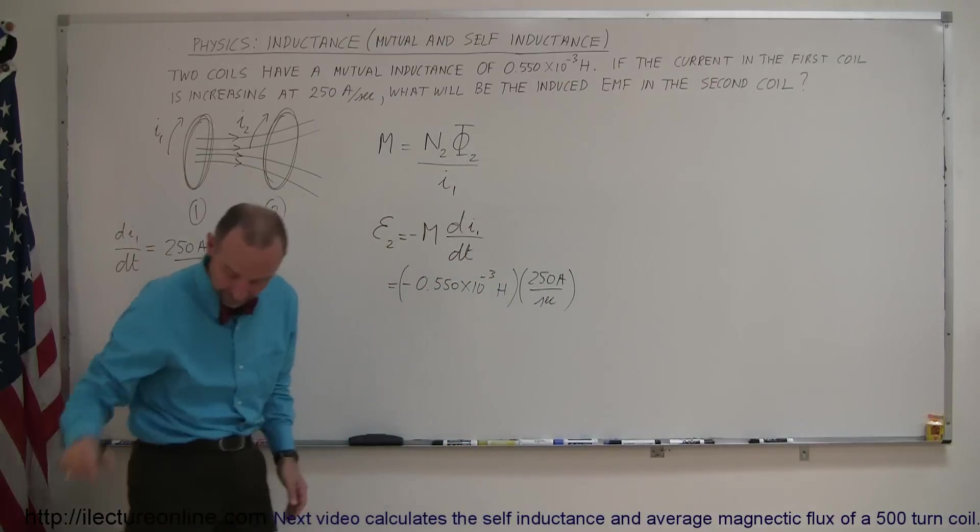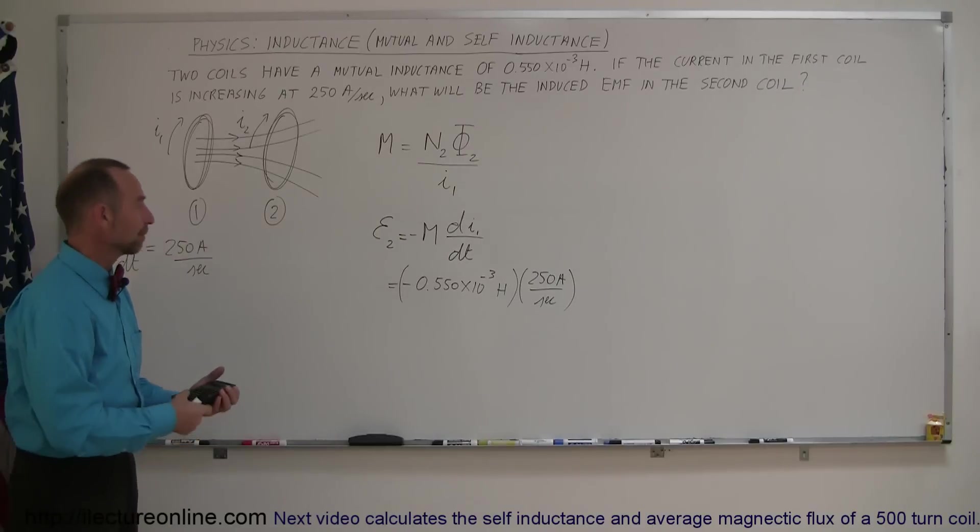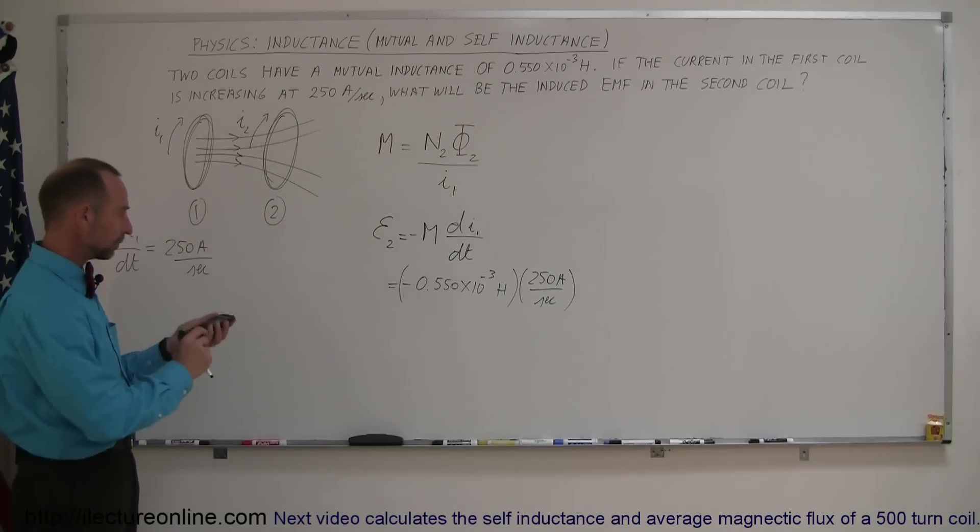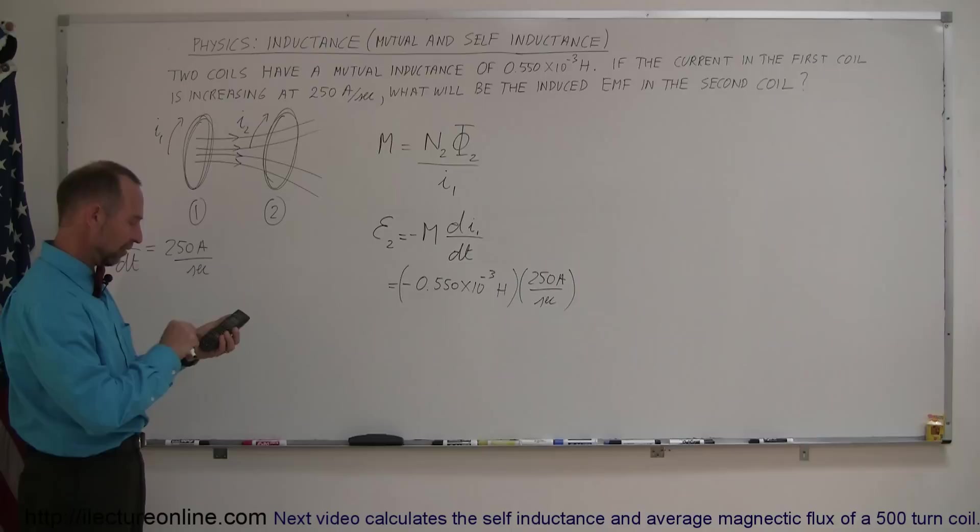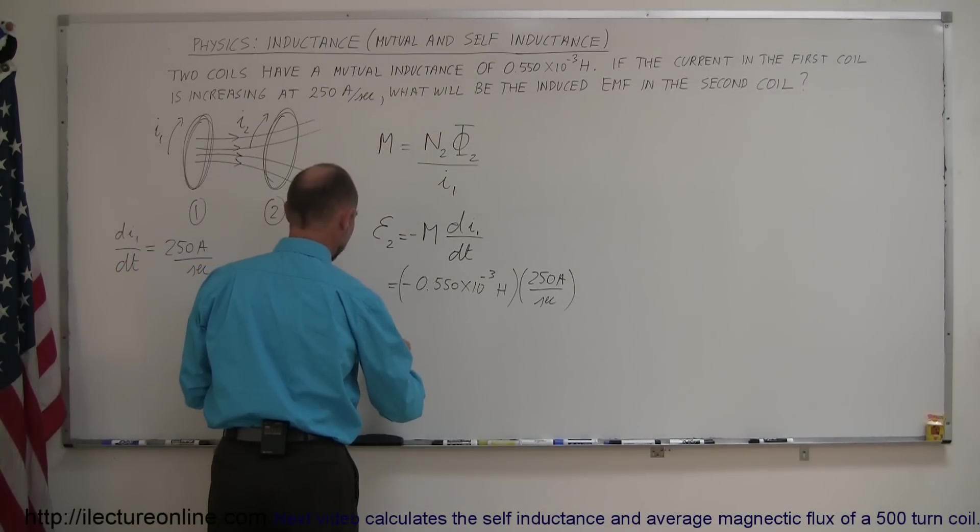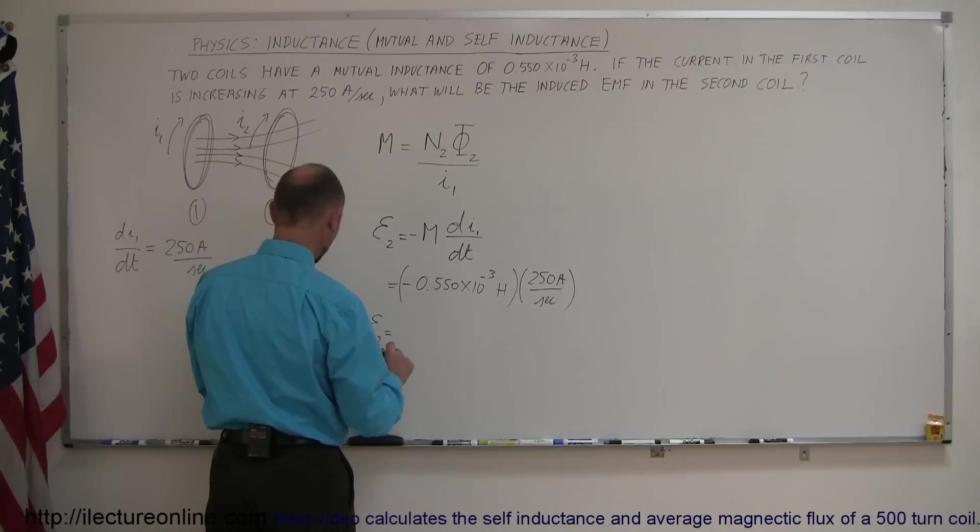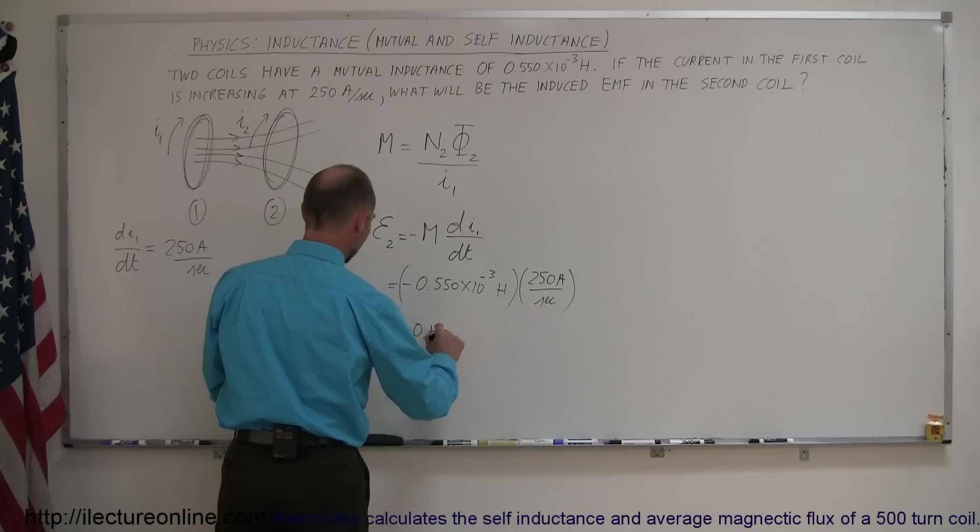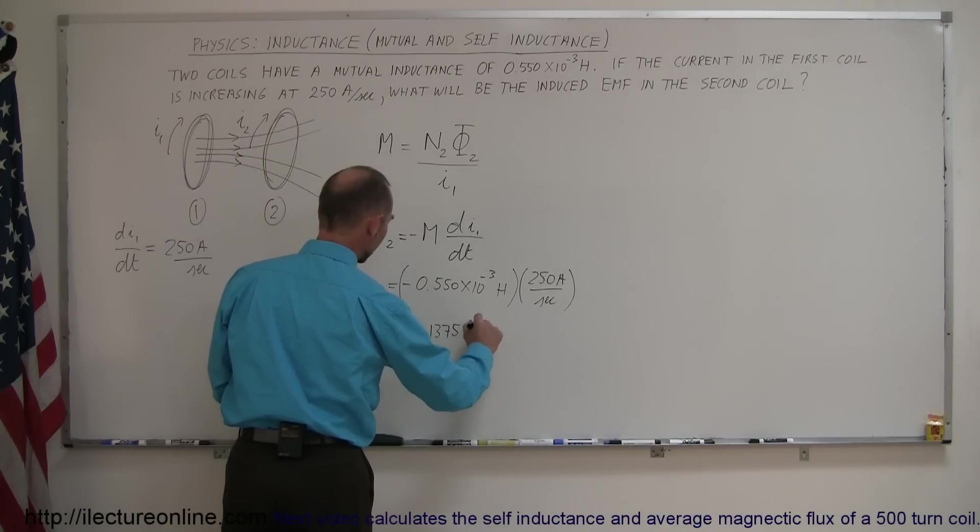And, let's see, do I have my calculator? Right here. Okay, what is it equal to? So, we have 0.550, 0.55, e to the minus 3 times 250 equals, so that would produce or induce an EMF of voltage of minus 0.1375 volts.